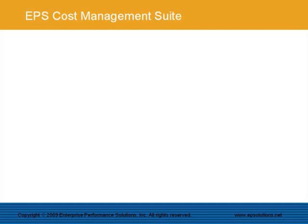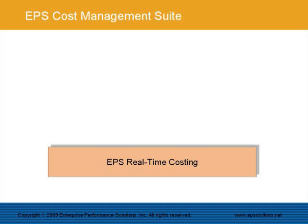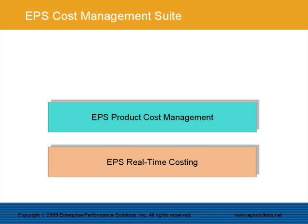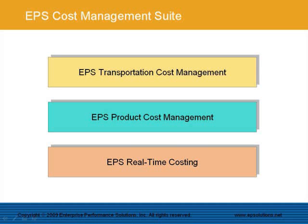The EPS Cost Management Suite is designed for the pulp and paper industry and is made up of three modules: EPS Real-Time Costing, EPS Product Cost Management, and EPS Transportation Cost Management. Customers can decide to implement one, two, or all of these modules based on their needs.